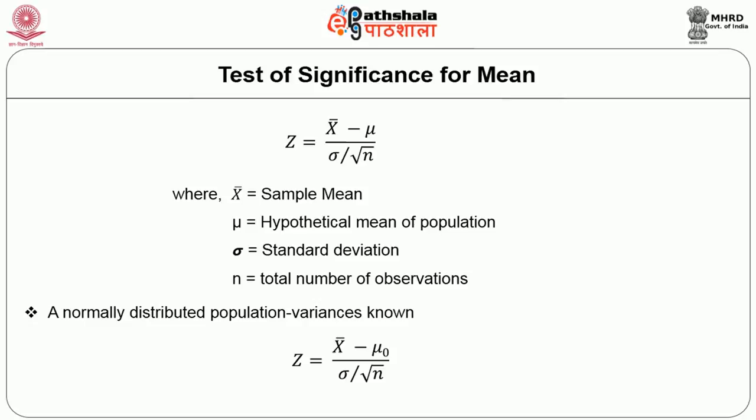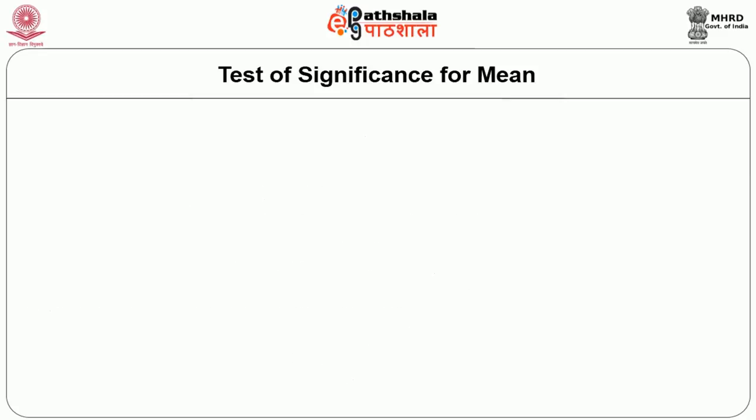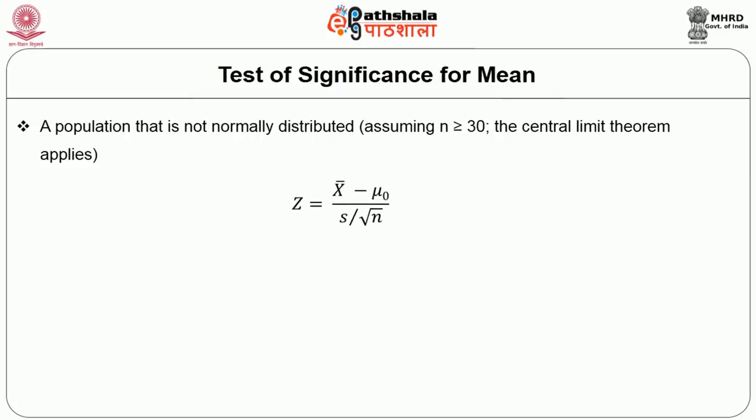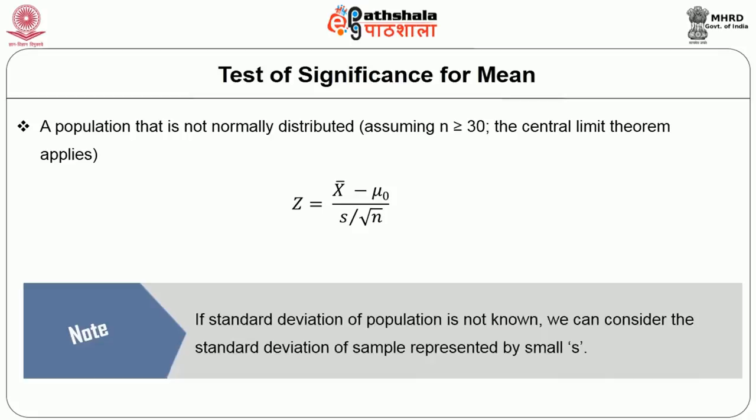Let us now move on to the test of significance for mean. The formula for the Z-test shows x-bar as the sample mean, mu as the hypothetical mean of the population, standard deviation, and N as the total number of observations. If the population is normally distributed and variances are known, we use this formula. When the population is not normally distributed but the sample is greater than 30, we use an alternative formula. If the standard deviation of the population is not known, we use the sample standard deviation, represented by small s.